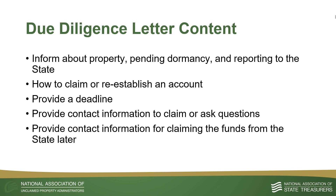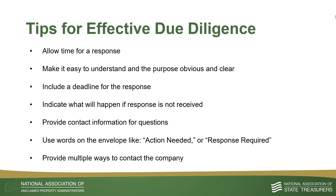The contents of the letter should inform the owner about the property and how the property is going to become dormant and reported to the states. You should tell them how they can reclaim or re-establish the accounts, giving multiple contact points to reach out to. Some tips we recommend for due diligence communication: make it easy to understand and the purpose is obvious and clear. The word 'escheat' is not widely known and technically incorrect, so you may want to use the word 'abandoned' or 'unclaimed property.' Also, clearly communicate that the owner has to take action — it may help to include the phrase 'action needed' or 'response required' on the exterior of your due diligence notification.